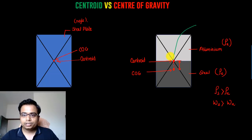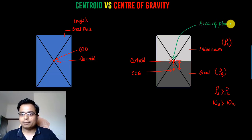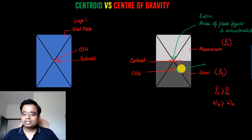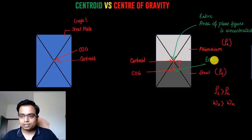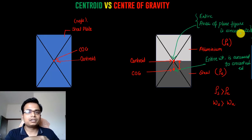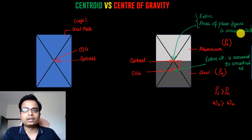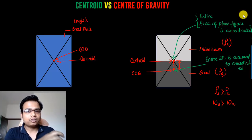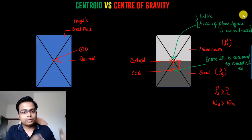Centroid is essentially the point where the entire area of the plane figure is assumed to be concentrated. The center of gravity is the point where the entire weight is assumed to be concentrated. This is the key difference between center of gravity and centroid. This will be discussed further in the next episode, where we'll get more mathematical in our approach to find the values of centroid and center of gravity.